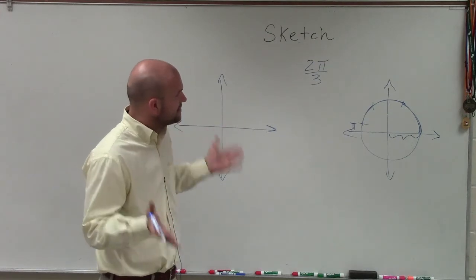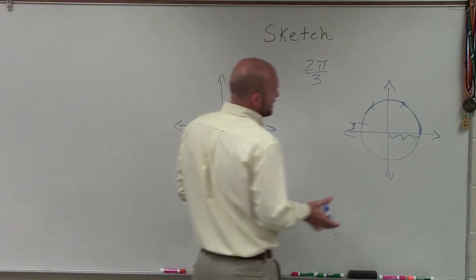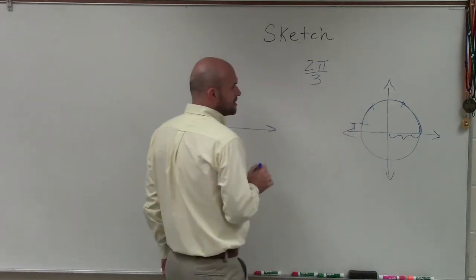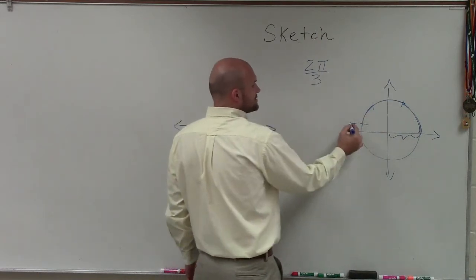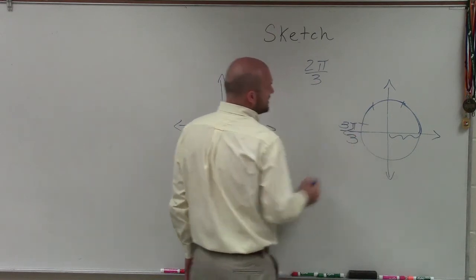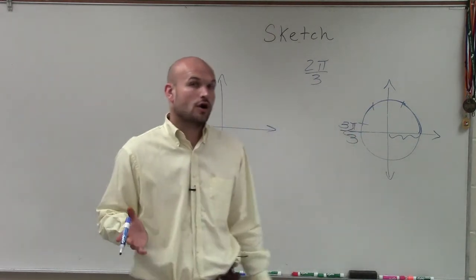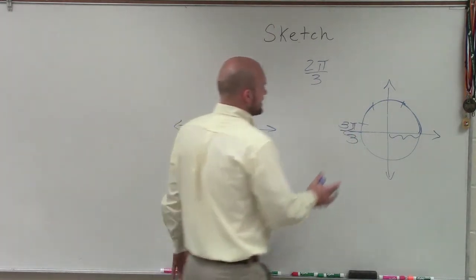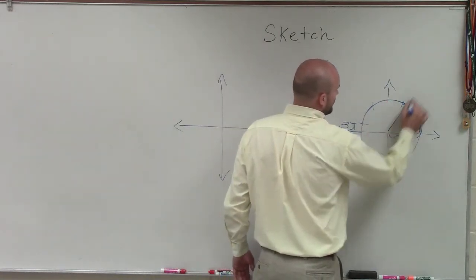So if I was going to take my radius and I want to break this up into thirds. If halfway around a circle is π radians, if I break that up into three parts, I can break this up into thirds.